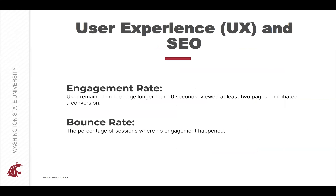Google's assessment of your website isn't limited to just technical factors — Google also monitors user interactions and the different ways they engage with your site. User engagement metrics reflect the quality of your website, so if you improve your site's user experience, you're also boosting your search engine performance. Two metrics that can help you determine how optimized your content is are engagement rate and bounce rate. Engagement rate is determined by whether a user remained on the site longer than 10 seconds, viewed at least two pages, or initiated a conversion.